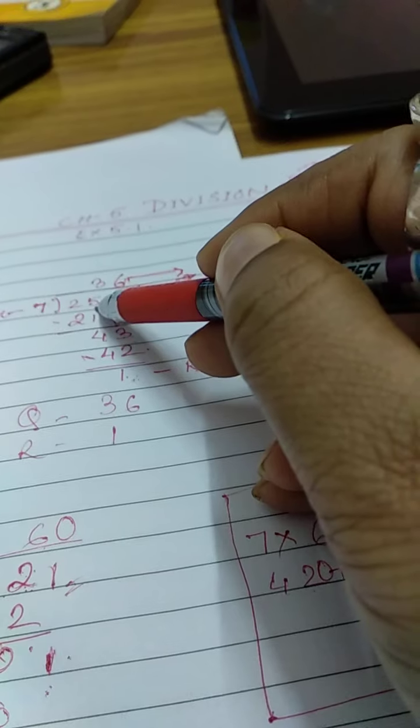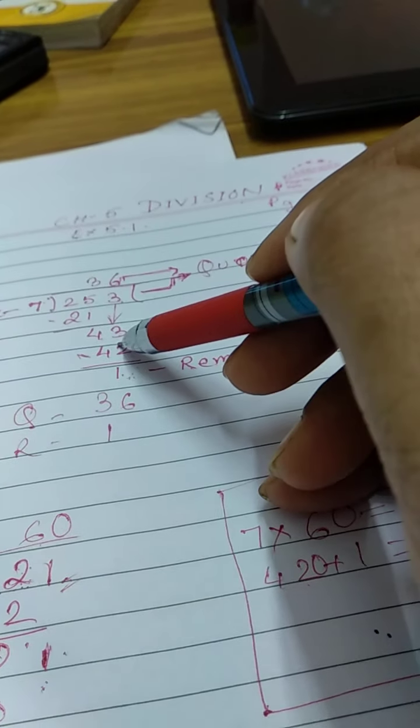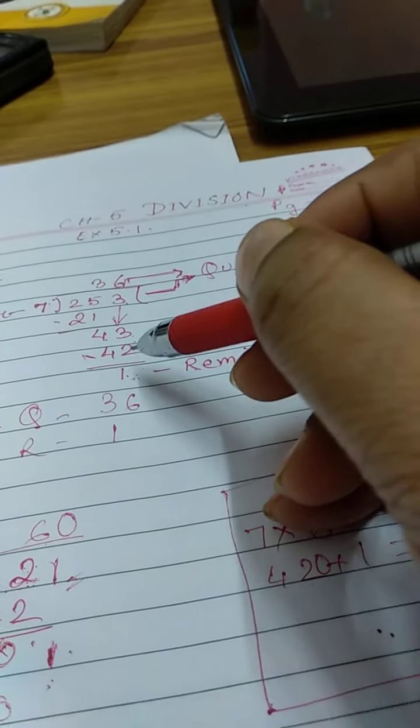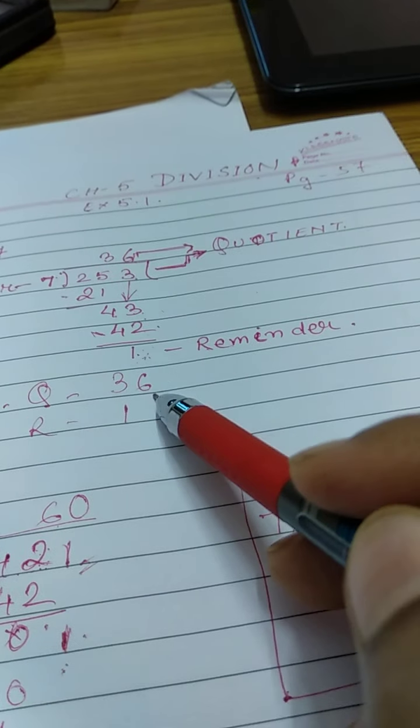And in 25 place I have written at the top of 5 because 2 is not working, it is smaller than 7. That's why I have to take 25. And 6 at the top of 3. Now the remainder is 1. So I will write answer, quotient 36, remainder 1.